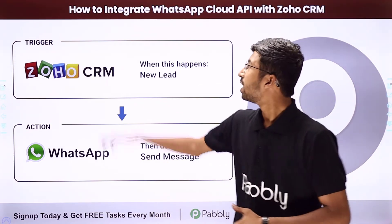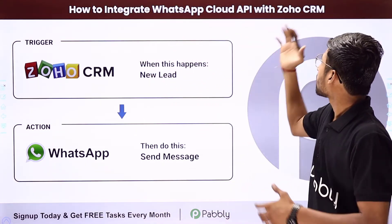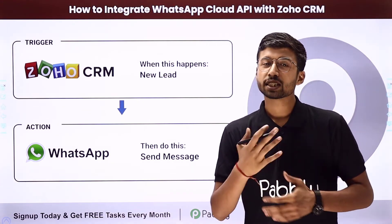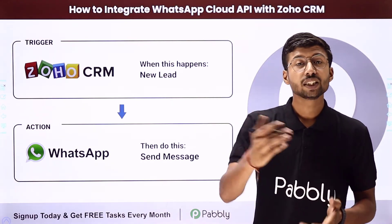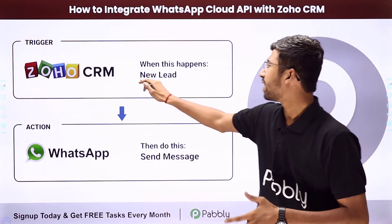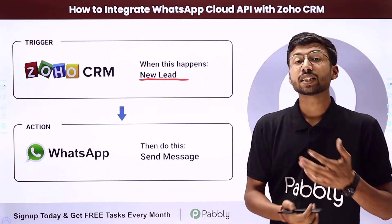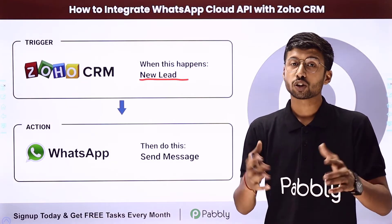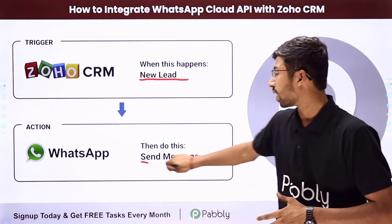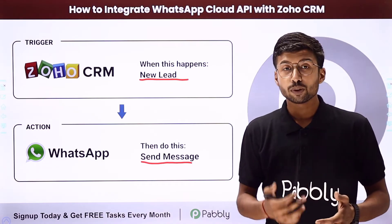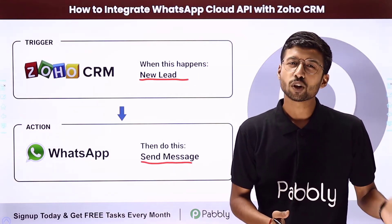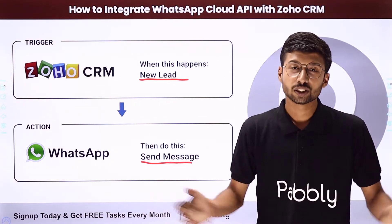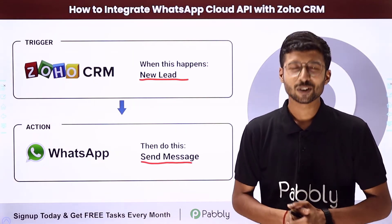In this video, we will learn how to integrate WhatsApp Cloud API with Zoho CRM. I'll show you how you can send WhatsApp messages for events in Zoho CRM. For example, if you have added a new lead in Zoho CRM, how you can send a welcome message to that new lead, or if you have created a new contact, invoice, or something like that — and how you can set up this automation to connect WhatsApp Cloud API with Zoho CRM.